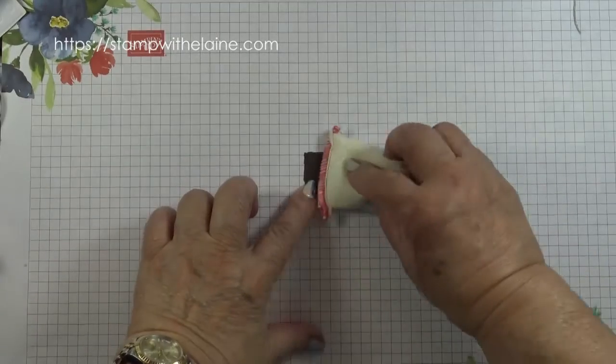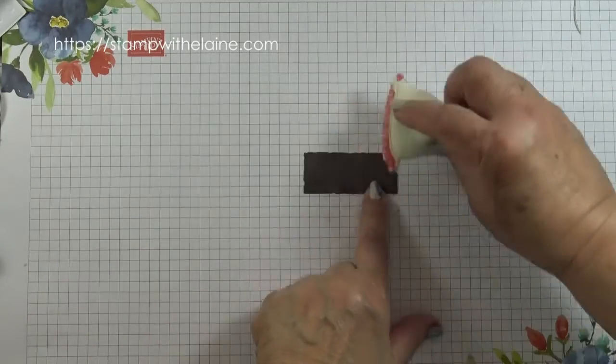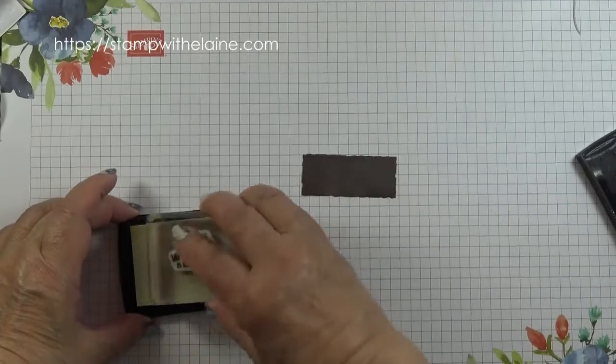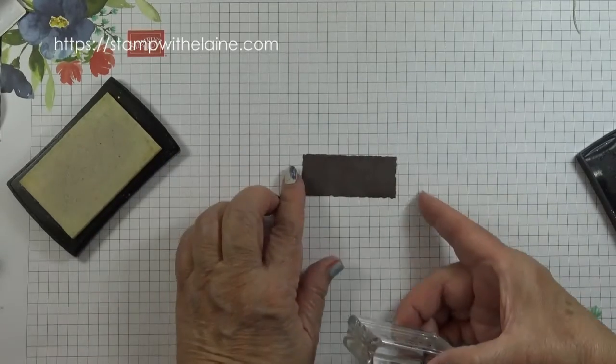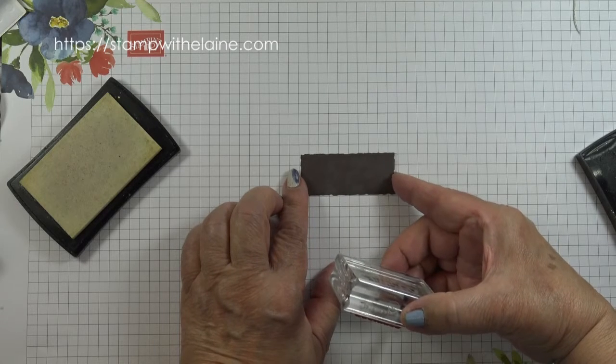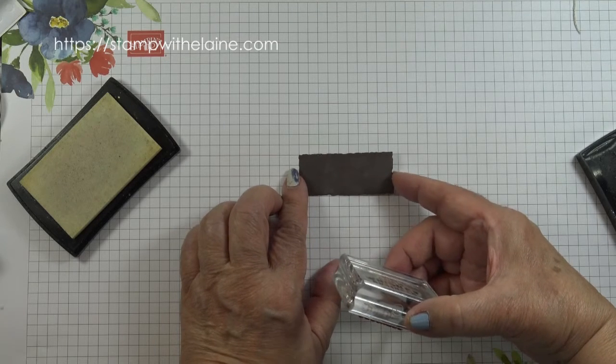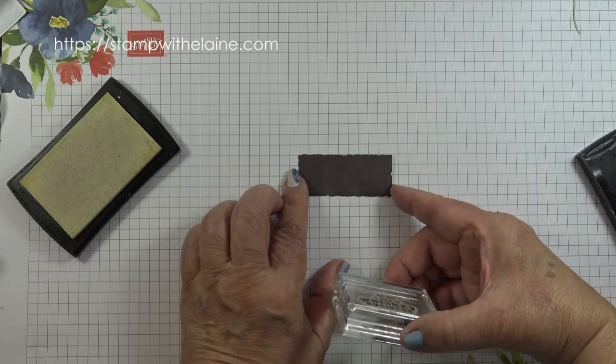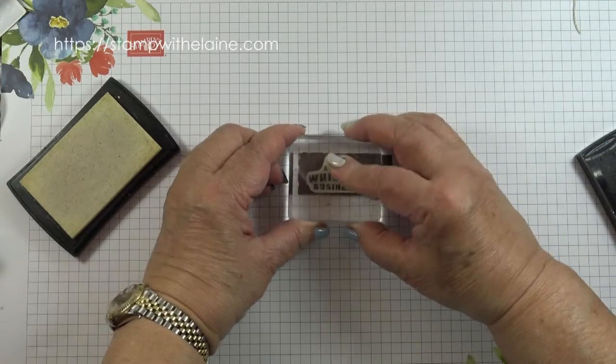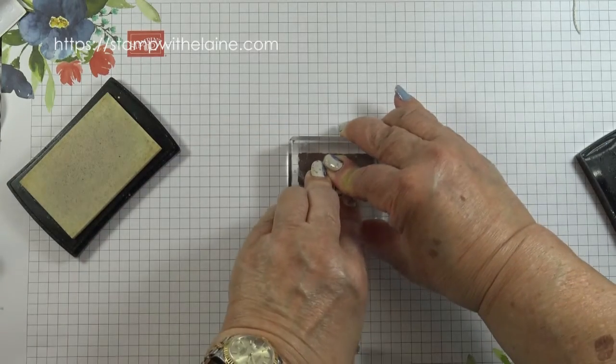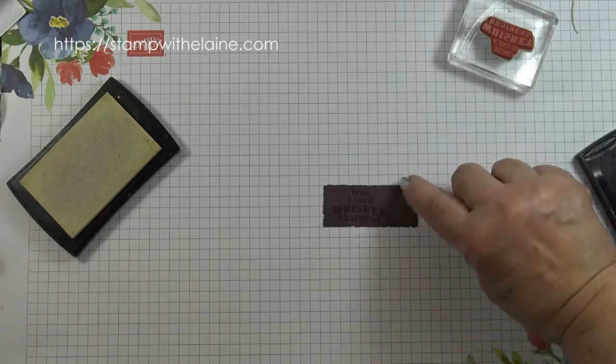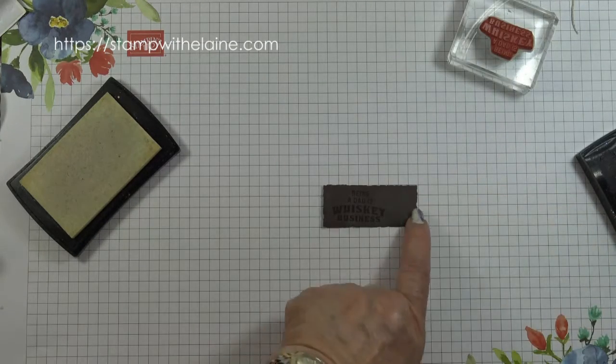I'm going to start by embossing my sentiment so I'll need my Versamark ink and the sentiment called whiskey business. Make sure my thing is straight and stamp it over to the left a little bit so then I can tie my linen thread on that end.